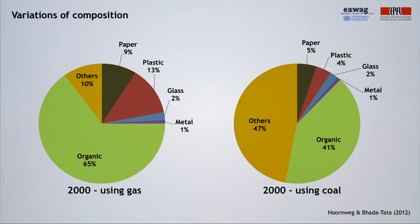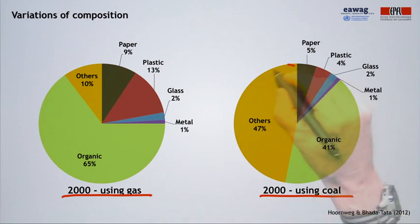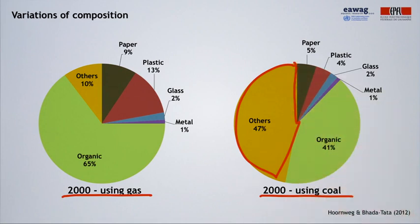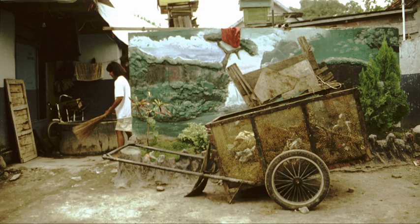Another example comes from China, where we differentiate between households using gas and households using coal. The difference is predominantly in the fraction of 'other,' which is mainly ash — ash from using coal that ends up in the waste stream. This example also shows how waste composition affects collection. In Indonesia, waste at the household has quite a large fraction of sand and stones, so the waste collection vehicle was adapted by applying mesh walls, which act as a sieve during transport to let the sand fall out of the waste collection cart.